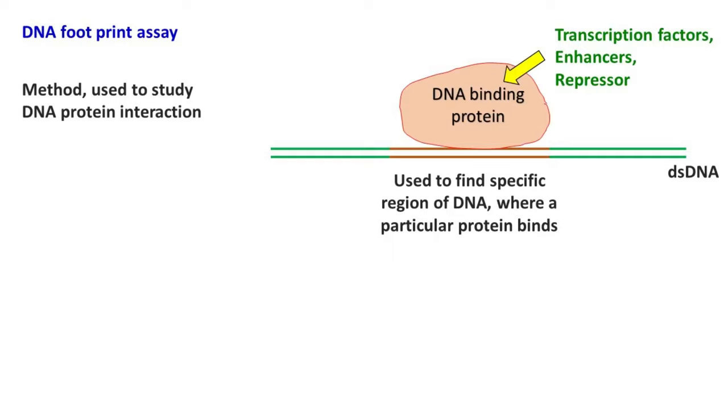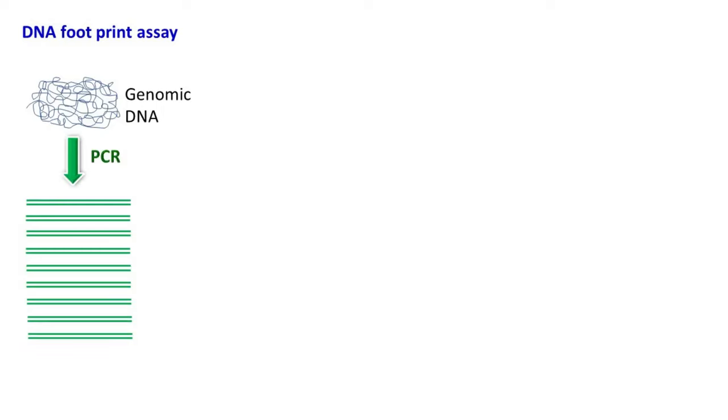To carry out footprint assay, the DNA segment to be studied is amplified using PCR. The DNA segment is usually between 50 to 200 base pairs in length. The PCR amplicon is then labelled with P32 or a fluorescent dye.